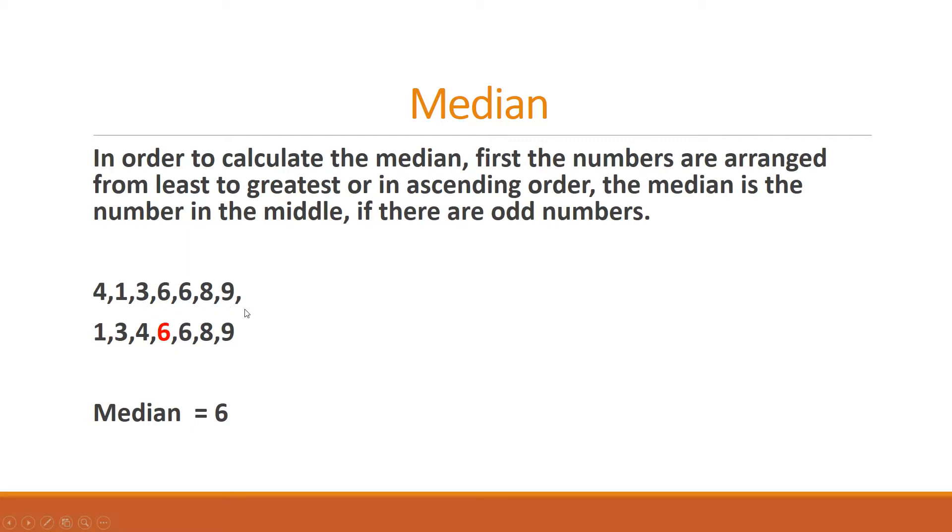First we have to arrange in order 1, 3, 4, 6, 6, 8, 9. So 6 comes in the middle which is the median. If the numbers are odd, see we have left 3 here, 3 here. The middle one is 6, that is the median.